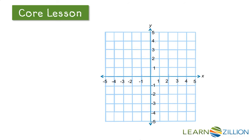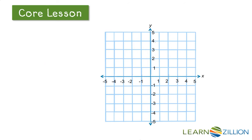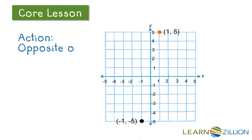Now let's take the opposite of both x and y, and we'll reflect into quadrant 4. Let's start with a point in quadrant 3, negative 1, negative 5. Let's take the opposite of both the x and y, and we'll reflect it into quadrant 1.